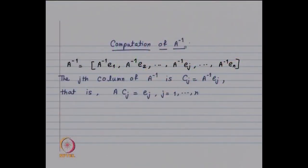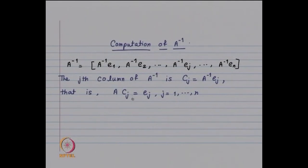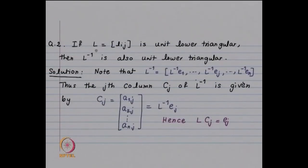When you solve Lx = eⱼ, whatever result you get, write it as the j-th column; that gives you the inverse of A. We will use this result to show that the inverse of a lower triangular matrix is lower triangular. The computation of A⁻¹ is given by A⁻¹ = [A⁻¹e₁, A⁻¹e₂, ..., A⁻¹eₙ]. The j-th column cⱼ of A⁻¹ equals A⁻¹eⱼ, or equivalently, Acⱼ = eⱼ for j = 1 to n. Thus the j-th column of A⁻¹ is obtained by solving the linear system Acⱼ = eⱼ, where eⱼ has 1 at position j and 0 elsewhere.